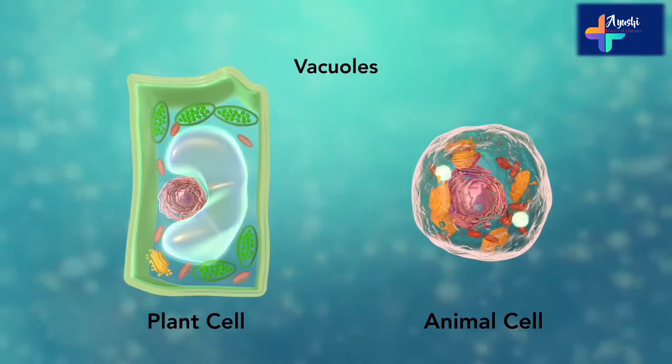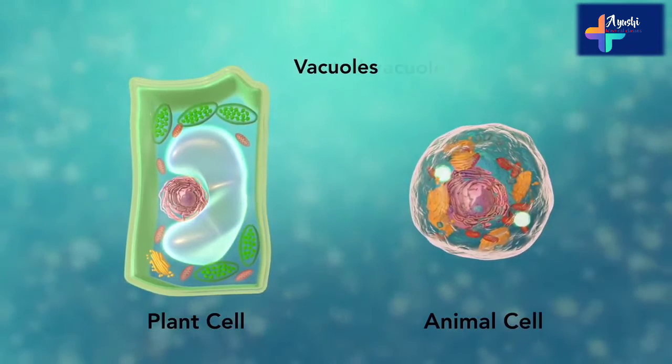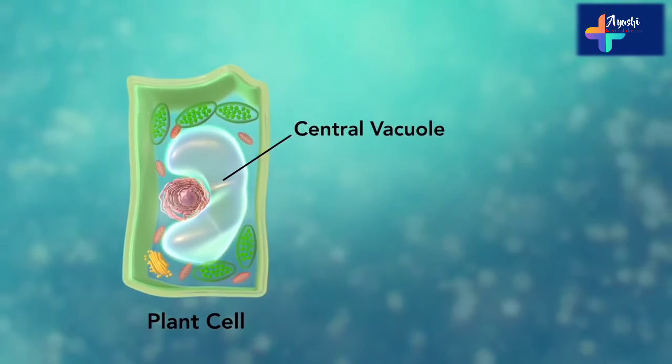Vacuoles are sac-like structures that store different materials. Here in this plant cell, the central vacuole stores water.